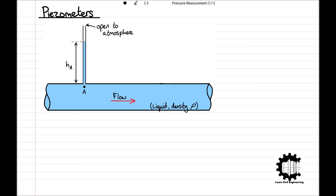Hence at the base of the liquid column at point A the gauge pressure p_a must equal rho g h_a.